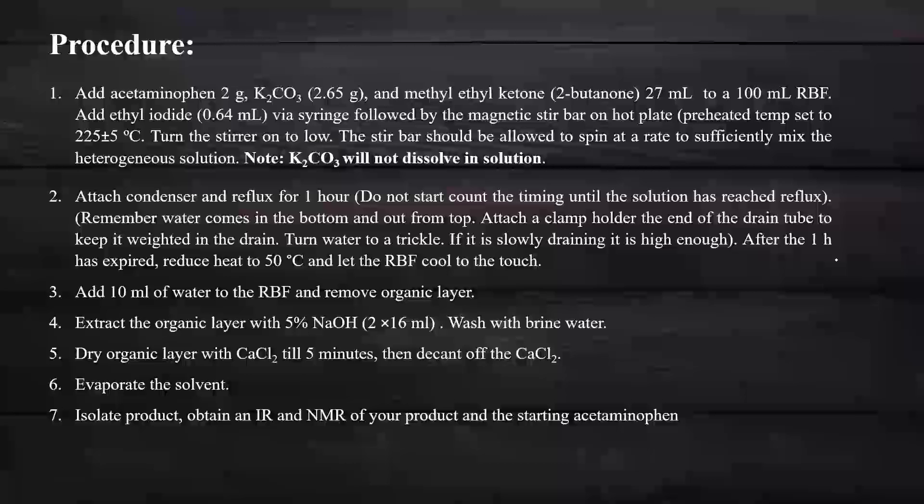The third one is the procedure. First of all, take 2 grams of acetaminophen, weigh 2.65 grams of K2CO3, add 27 ml of methyl ethyl ketone to a 100 ml RBF, add 0.64 ml ethyl iodide via syringe, followed by the magnetic stirrer on a hot plate. Turn the stirrer on low flame. The stir bar should be allowed to spin at a rate sufficient to mix the heterogeneous solution. Note that K2CO3 will not dissolve in solution. K2CO3 remains undissolved in the solution, so don't try to dissolve it.